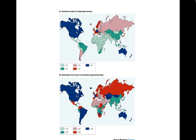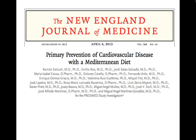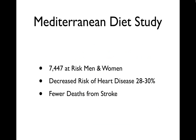I'll come back to that in a couple of seconds. This was probably the biggest study that came out last April in the New England Journal of Medicine — a study in Spain looking at 7,447 people who were already at risk for heart disease. The outcomes were a nearly one-third decrease in the risk of heart disease and strokes by switching to a Mediterranean diet, which I would say falls within this broad umbrella of a plant-based diet.